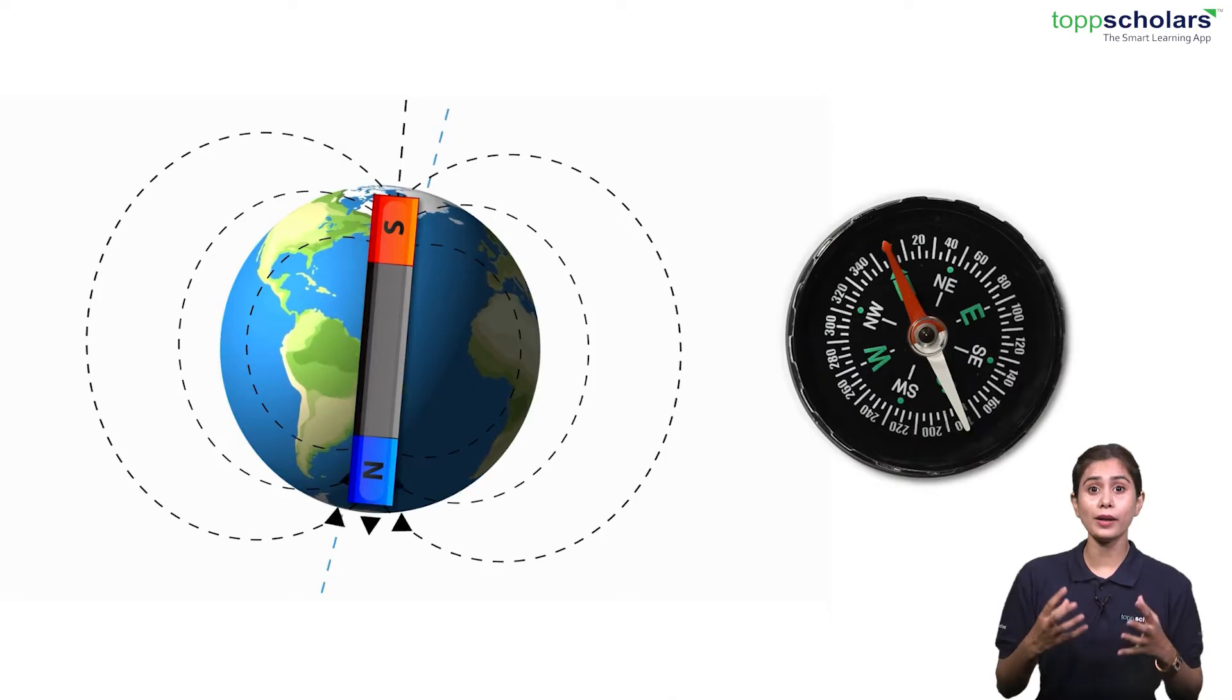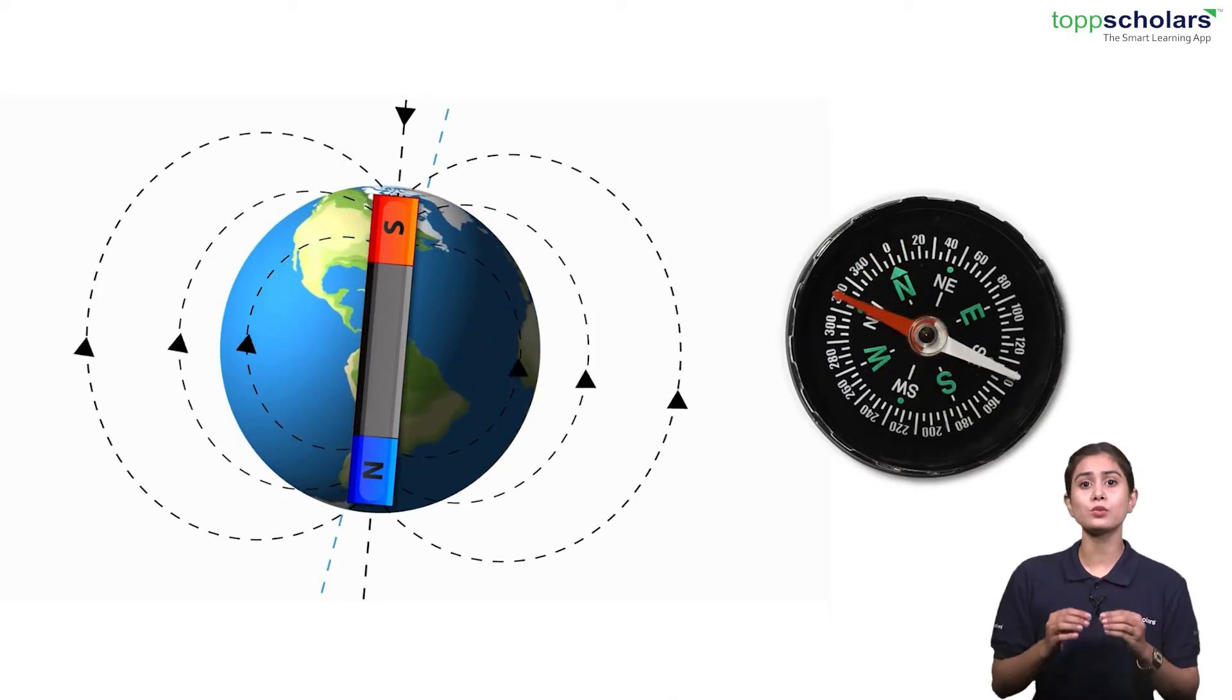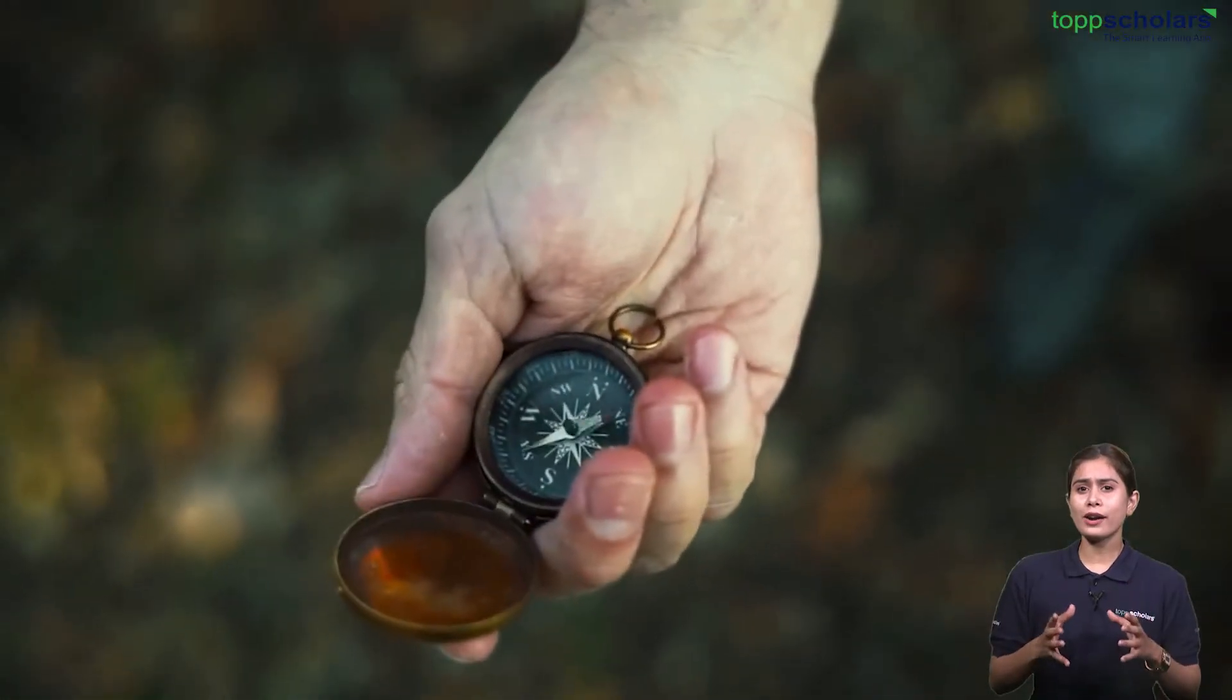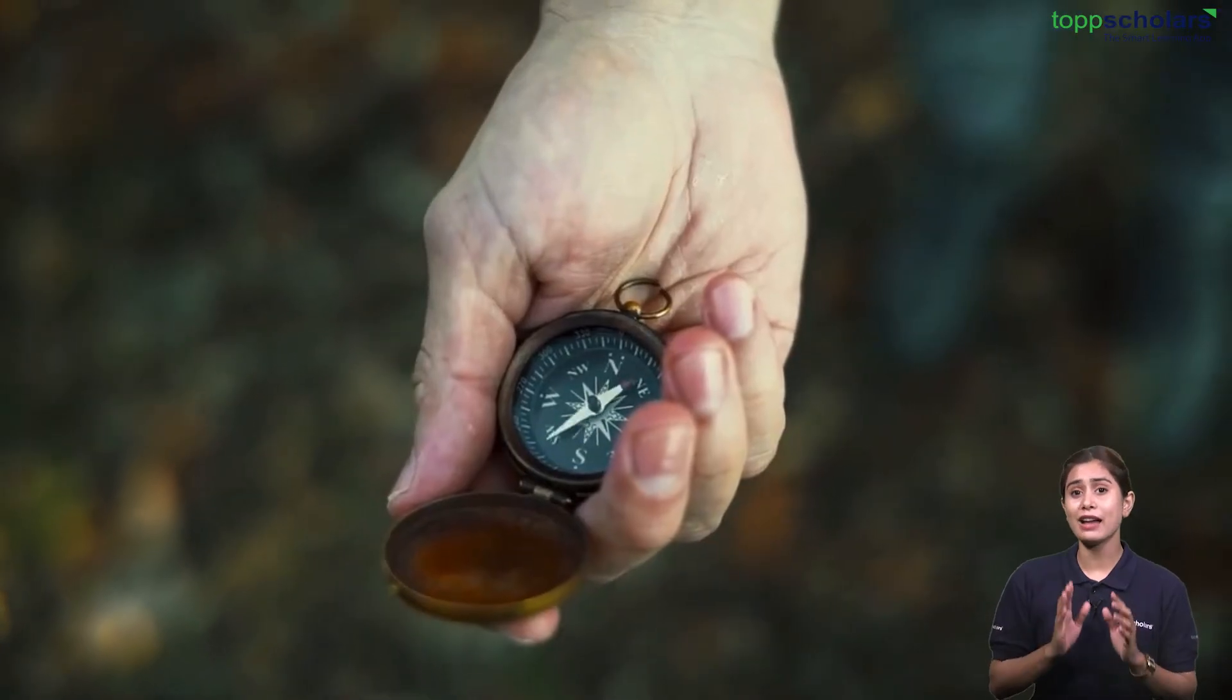That's why compasses work. The needle in a compass always points towards the earth's north pole. For as long as we can remember, people have used compasses for navigation.